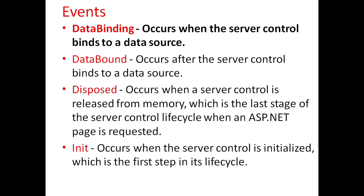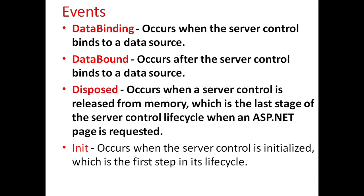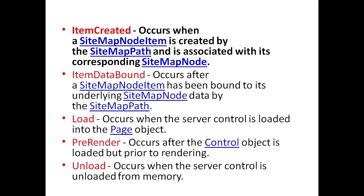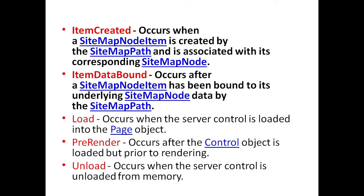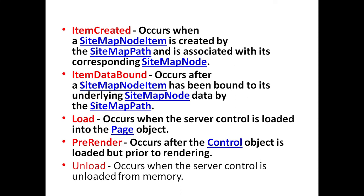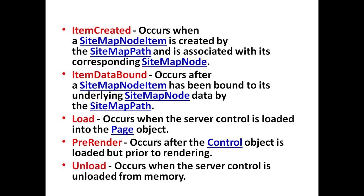Different events of SiteMapPath include: DataBinding, which occurs when the server control binds to a data source. DataBound event occurs after the server control binds to a data source. Disposed event occurs when a server control is released from memory, which is the last stage of the server control life cycle. Init event occurs when the server control is initialized, which is the first step in its life cycle. ItemCreated event occurs when the sitemap node item is created by the SiteMapPath and is associated with its corresponding sitemap node. ItemDataBound event occurs after a sitemap node item has been bound to its underlying sitemap node data. Load event occurs when the server control is loaded into the page object. PreRender event occurs after the control object is loaded but prior to rendering. Unload event occurs when the server control is unloaded from memory.